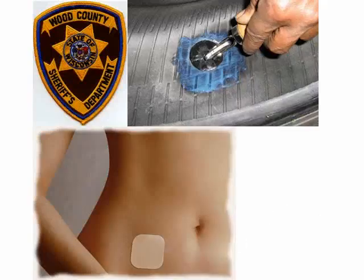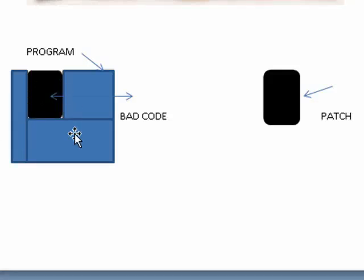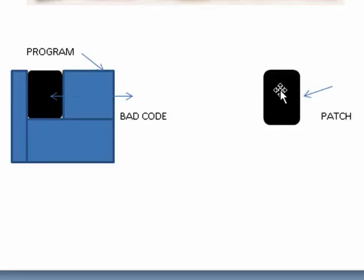A patch in computers is really kind of similar. A patch is actually like a program. And if a software developer or company finds that they've got a problem in their current release of their program, rather than release a whole new copy of the program — which could be very large, 50 megabytes, 100 megabytes, whatever it is — they create a patch. The patch is designed to fit right in the area that has the problem in the code — bad code is here. So they create a patch.